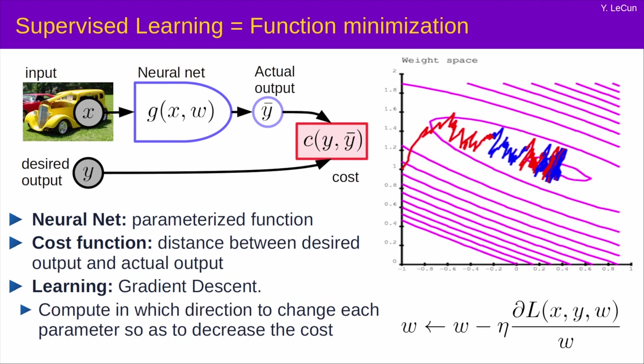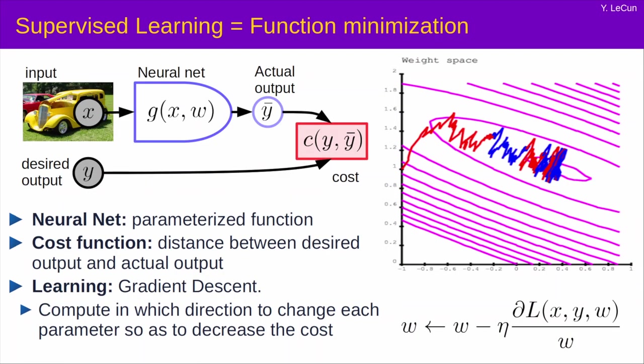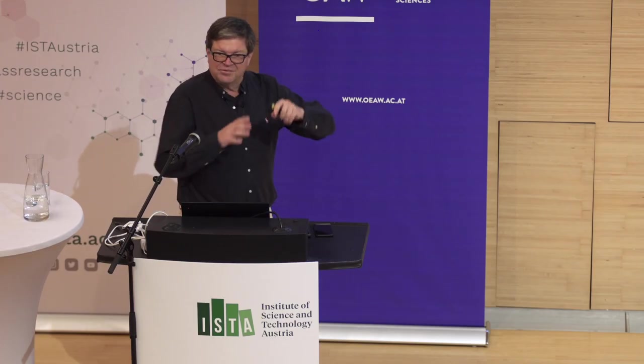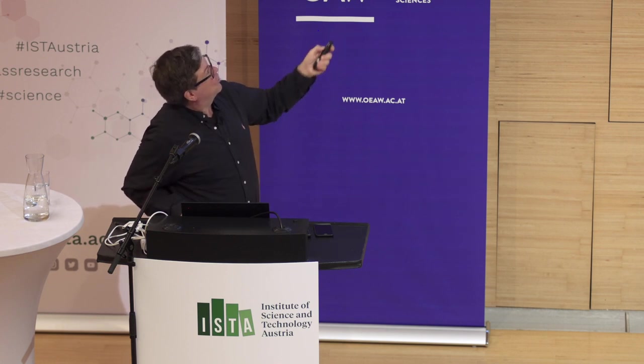Now, in the previous diagram I showed you here, there's only a few dozen knobs. In a real machine learning system, there can be millions, hundreds of millions, even hundreds of billions of knobs to adjust. And this is what we put in the g function. So what do we put in this box? That's the next question.